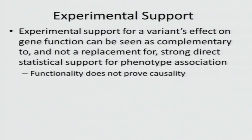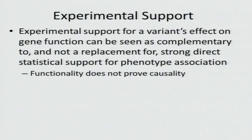How about experimental support? Experimental support is complementary to statistical support for phenotype, and we can say something about the functionality of a particular variant. But we have to remember: just because a variant is functional does not prove causality. It's unfortunate that for many years we've used the words 'functional' and 'causal' as though they mean exactly the same thing, which they clearly don't. A causal variant has to be functional, but a functional variant does not have to be causal.